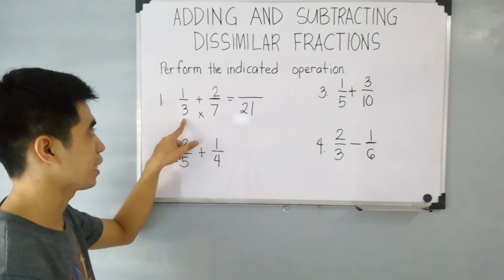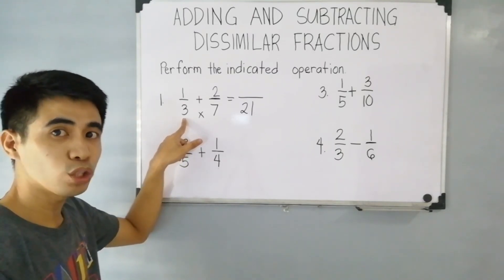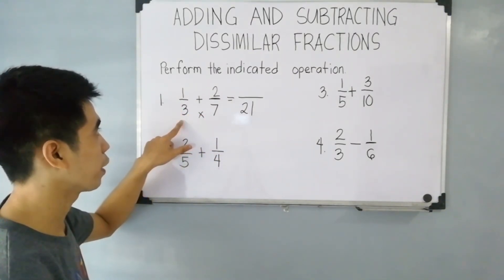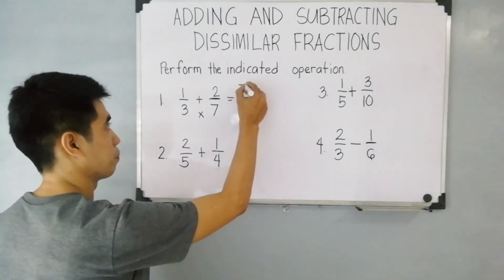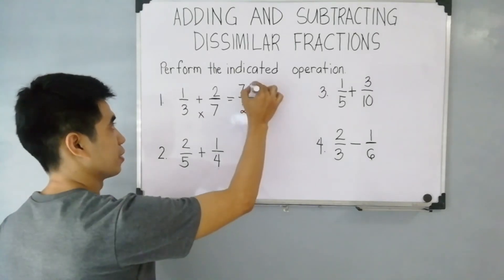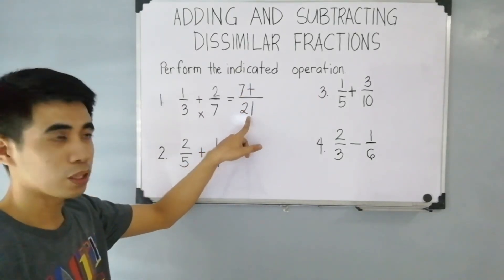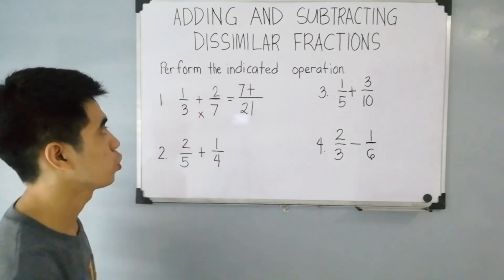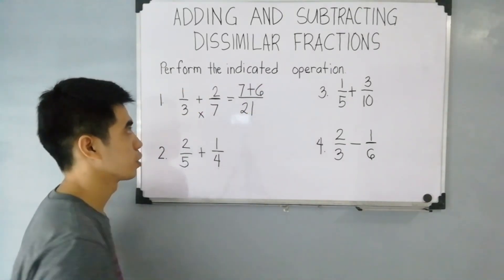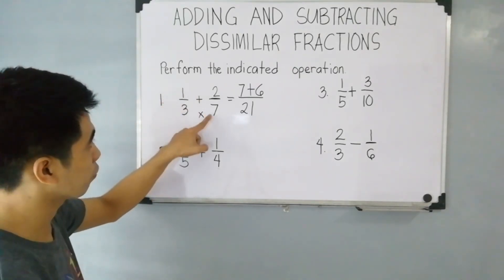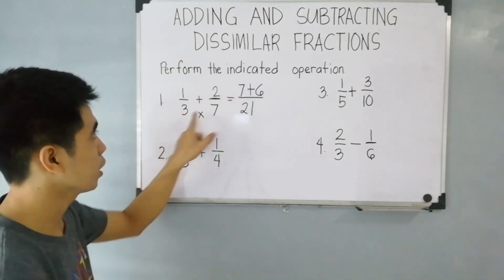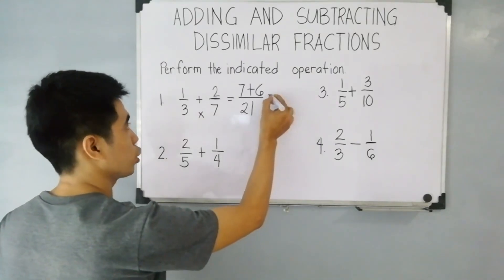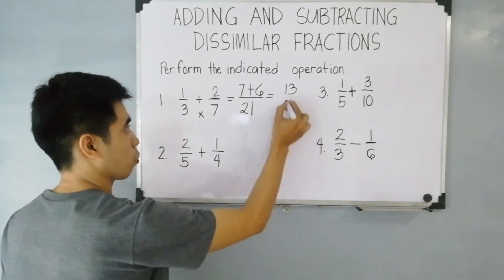The second step is to divide the LCD by each denominator. So 21 divided by 3 is 7, then multiply by the numerator which is 1, giving 7. Then divide 21 by the other denominator: 21 divided by 7 is 3, times 2, that is equal to 6. Or you can just multiply 1 times 7 to get 7, and 2 times 3 to get 6. Then combine 7 plus 6, that is equal to 13 over 21.